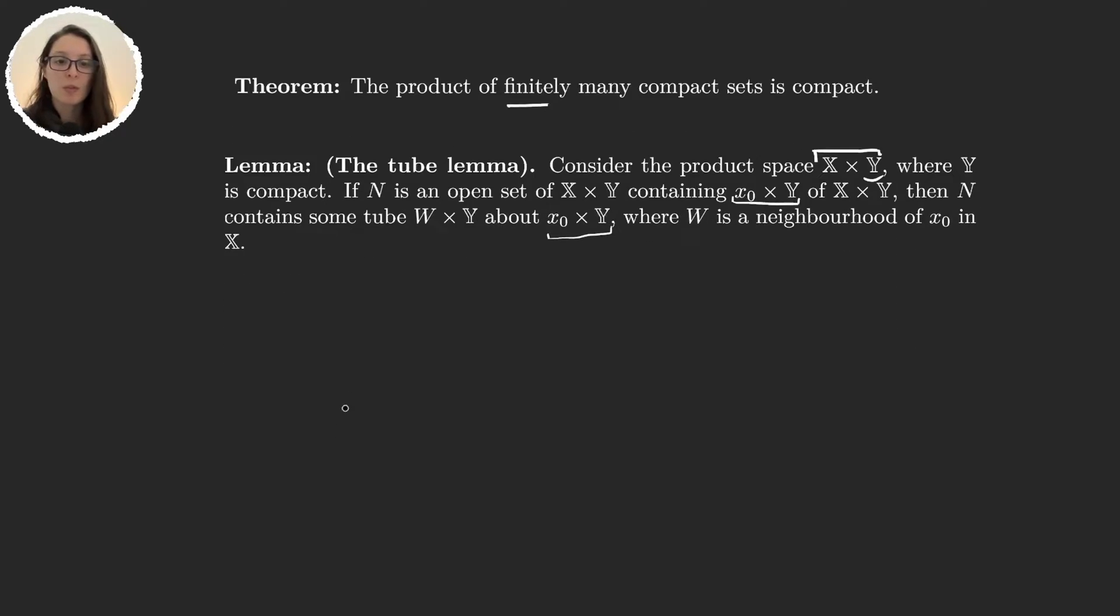So let's make a drawing of what this is saying. We have Y and X. And we are considering some x₀ here. x₀ times Y is this set right here. And we say that N is an open neighborhood of x₀ times Y. So N is going to be a set around here.